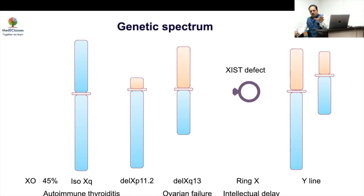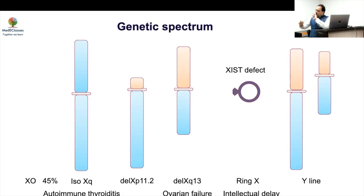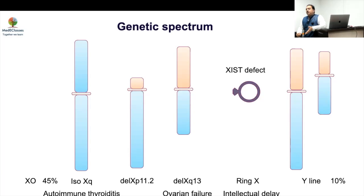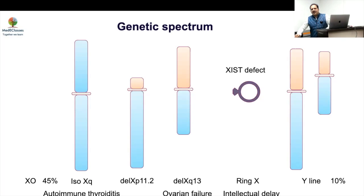A marker chromosome is a chromosome that cannot be classified as X or Y — it appears as a small unidentified patch of chromosome. You do not need to search for a Y cell line in every case. It is required when there is a marker chromosome, virilization at puberty, or when found on conventional karyotype. One theory for why classical monosomy X survives when no other monosomy does may be undetected mosaicism in specific tissues.